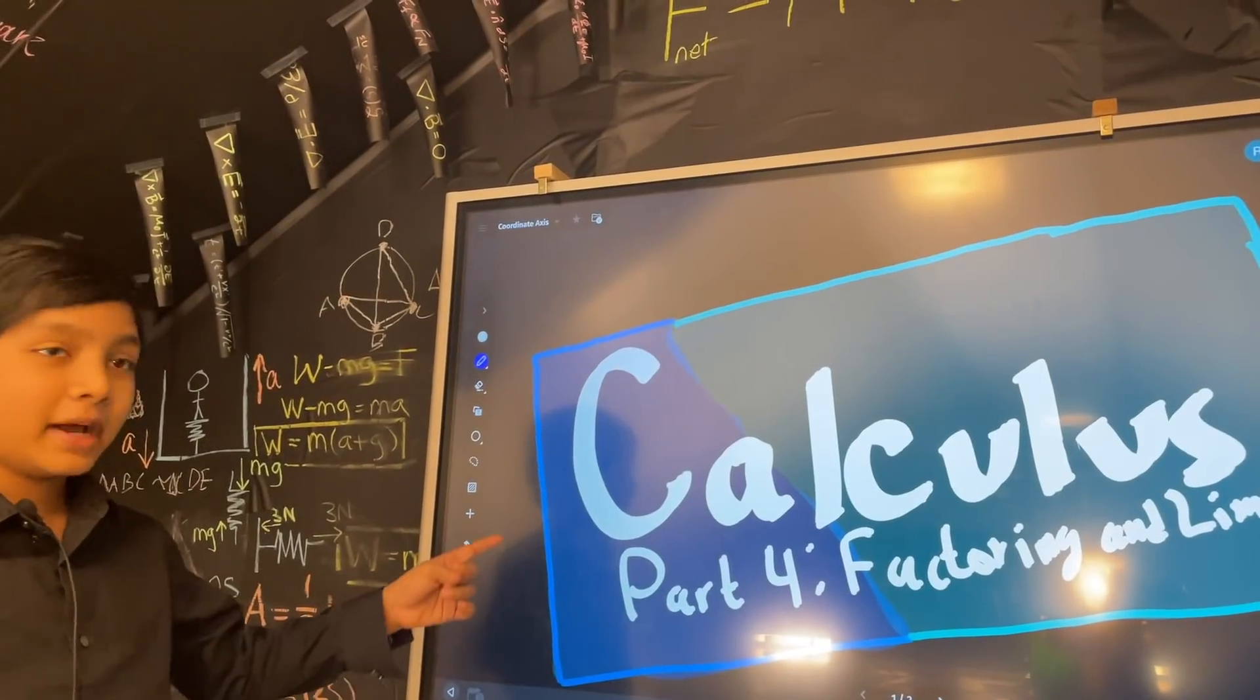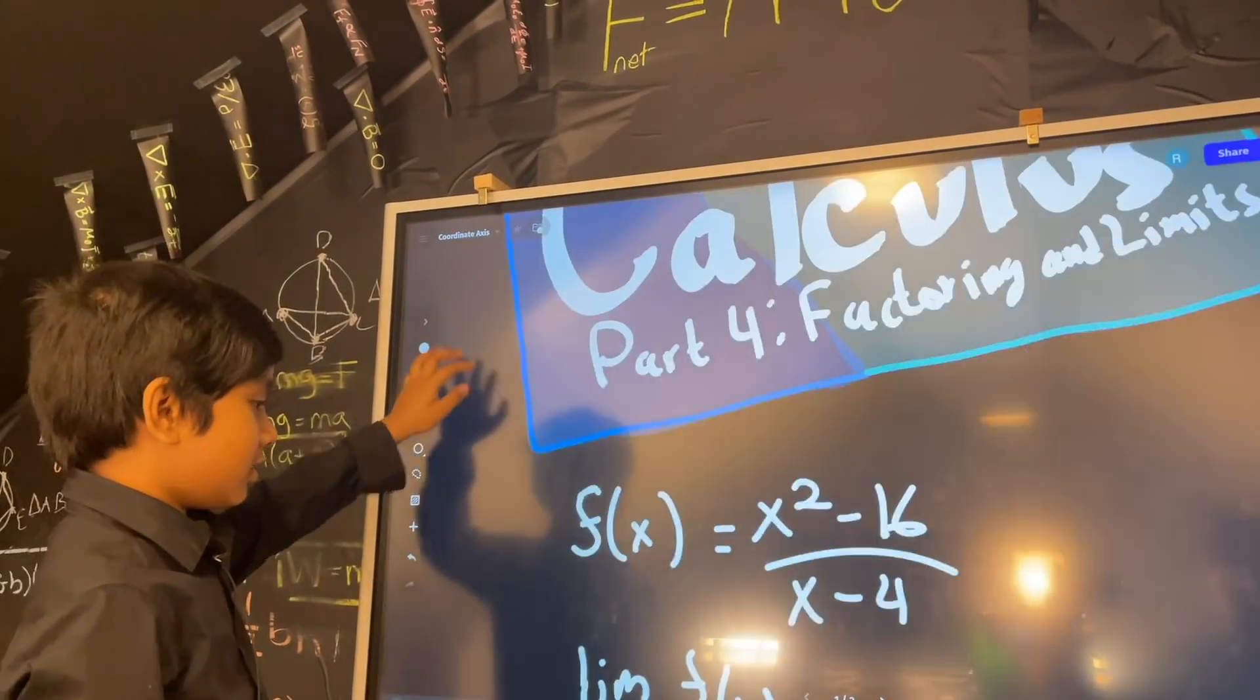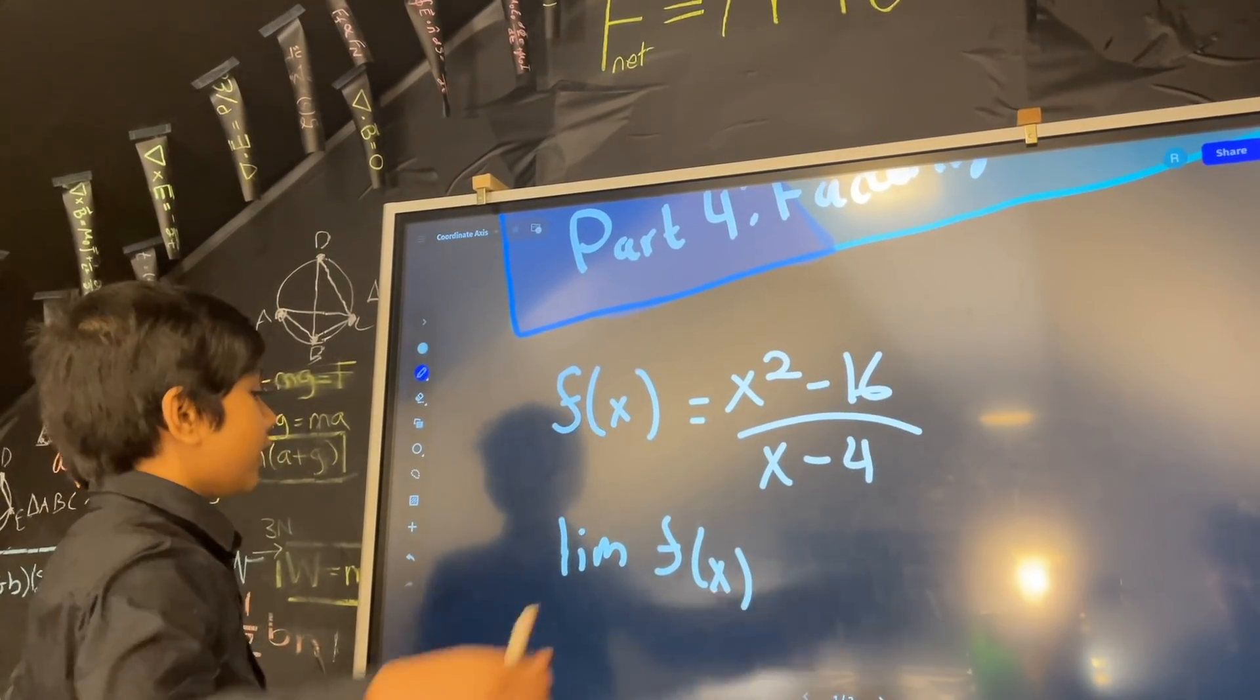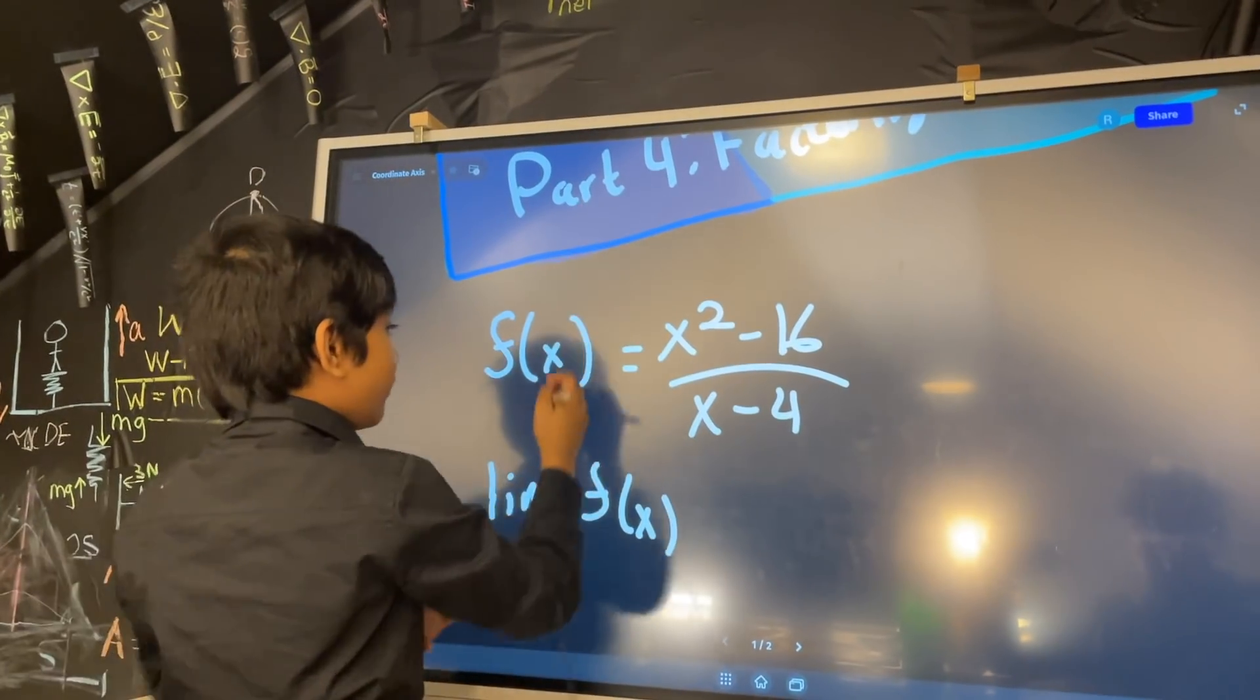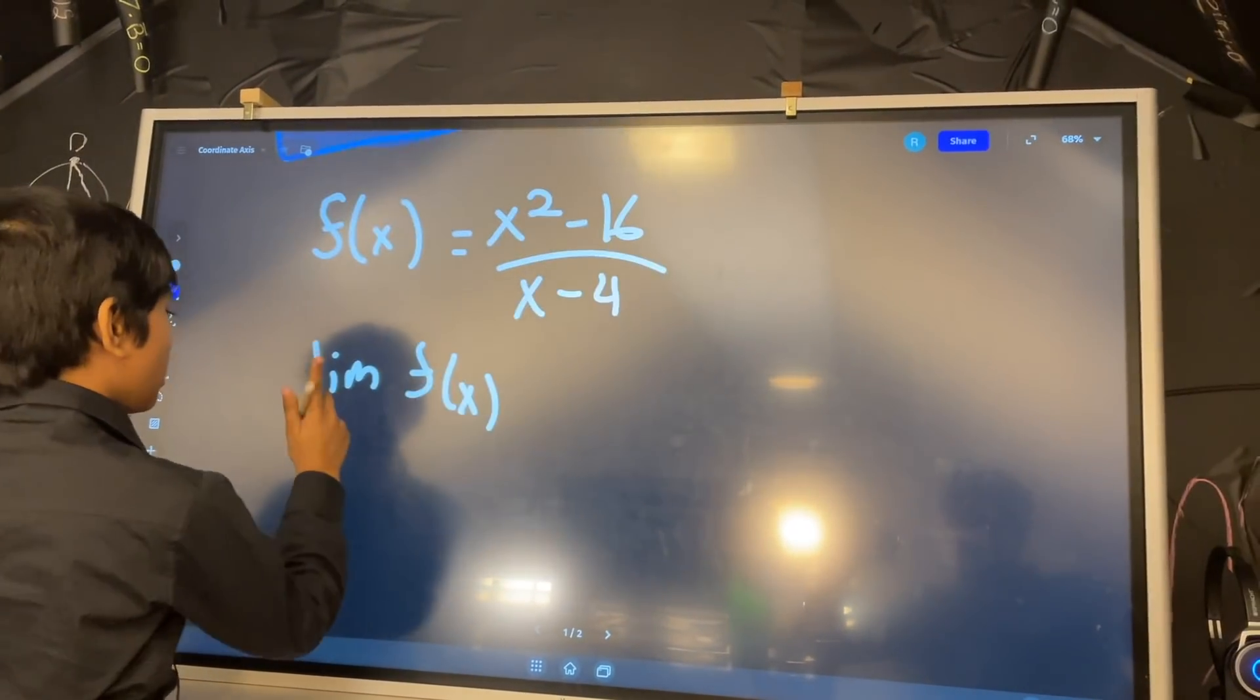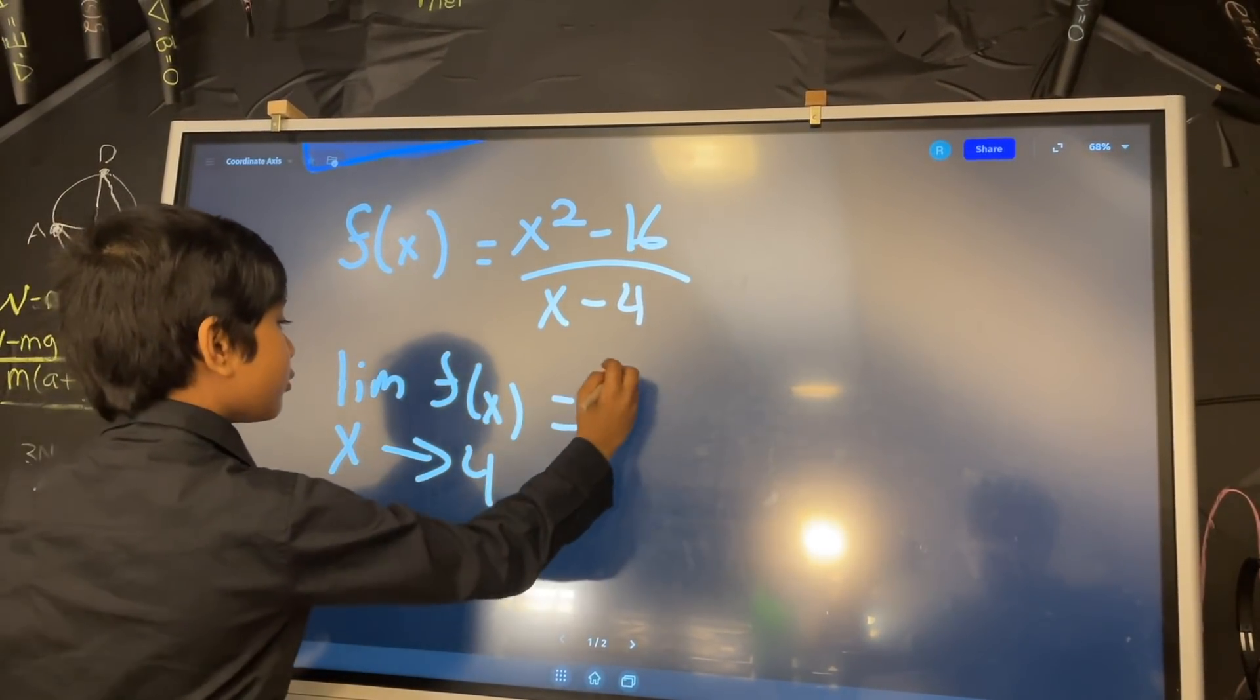No, seriously my hand hurt trying to draw this. So let's say we have this equation: f of x equals x squared minus 16 over x minus 4. What is the limit of f of x as x approaches 4?